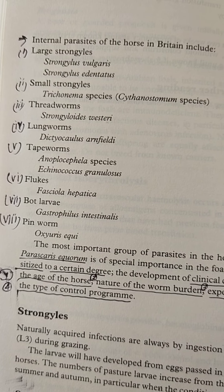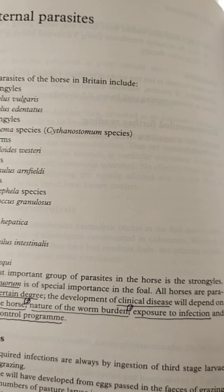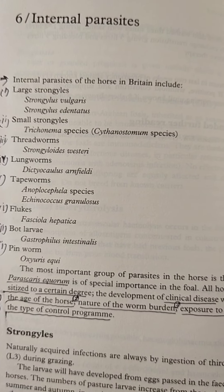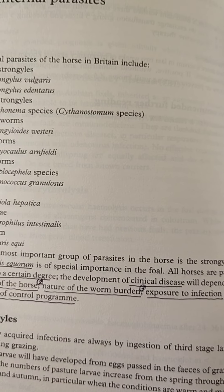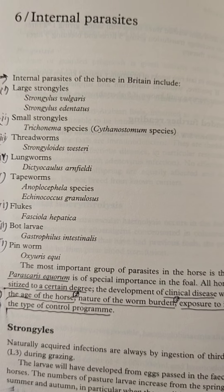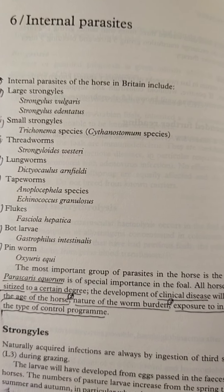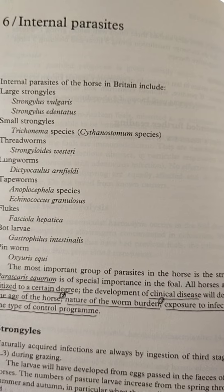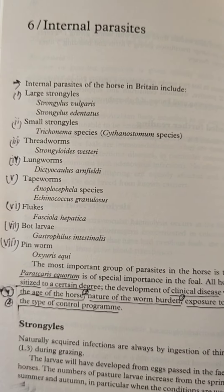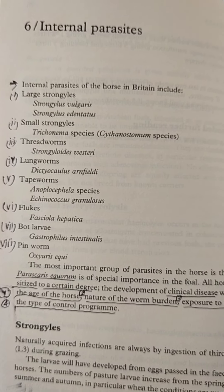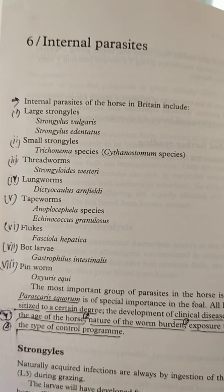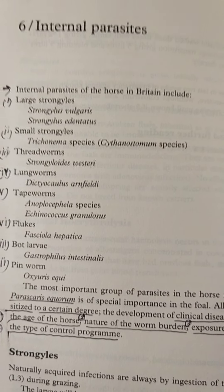Parascaris equorum is of special importance in the foal. All horses are parasitized to a certain degree. The development of clinical disease depends on: number one, the age of the horse; number two, the nature of the worm burden; number three, exposure to infection; and lastly, the type of control program. This covers the eight types of internal parasites in horses.